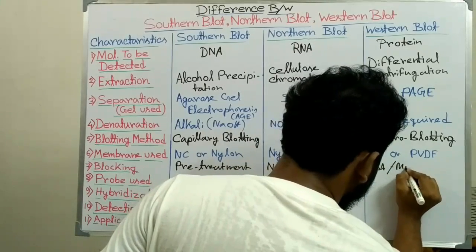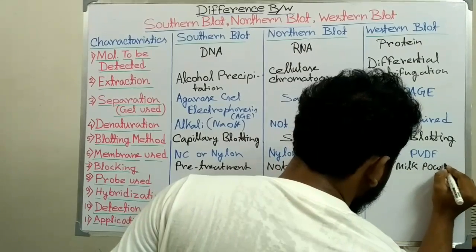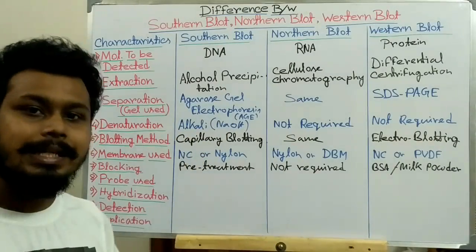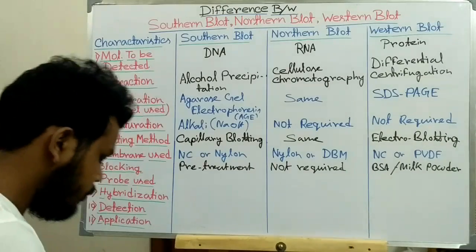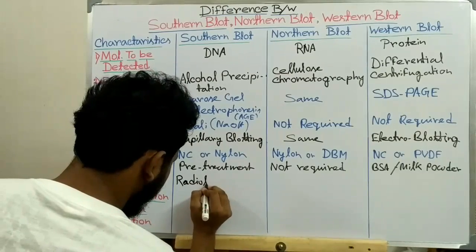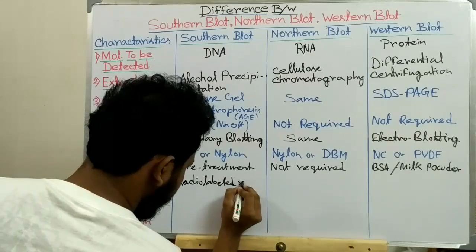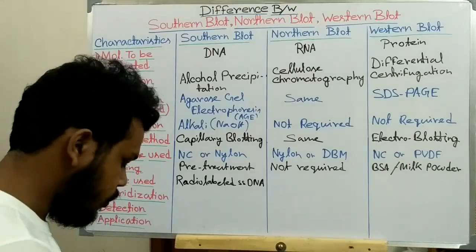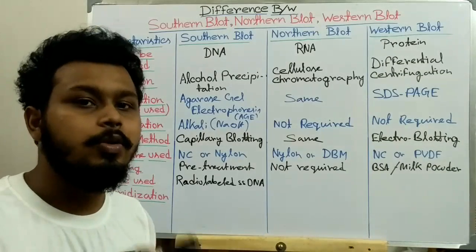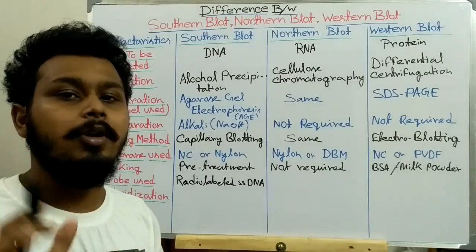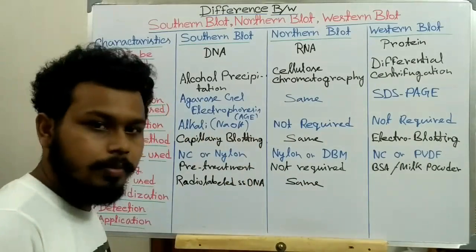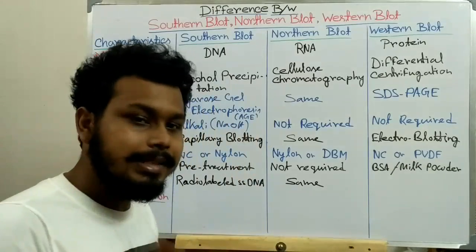The next point is the probe used. In Southern blot we use radiolabeled single-stranded DNA as a probe. In Northern blot we also use radiolabeled single-stranded DNA as a probe, and sometimes an RNA molecule is used as a probe. In Western blot we use primary and secondary antibodies.